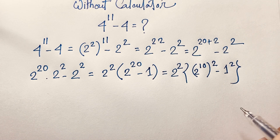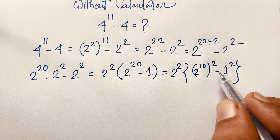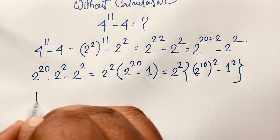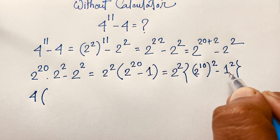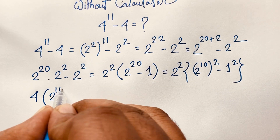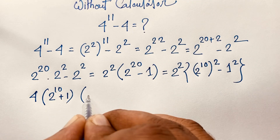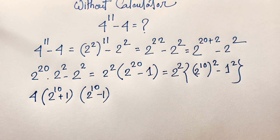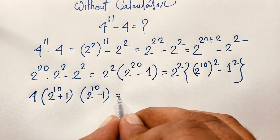So I apply the difference of squares law: a squared minus b squared equals (a plus b)(a minus b). Here, 2 to the power 2 equals 4. So the expression becomes 4 times (2 to the power 10 plus 1) times (2 to the power 10 minus 1).